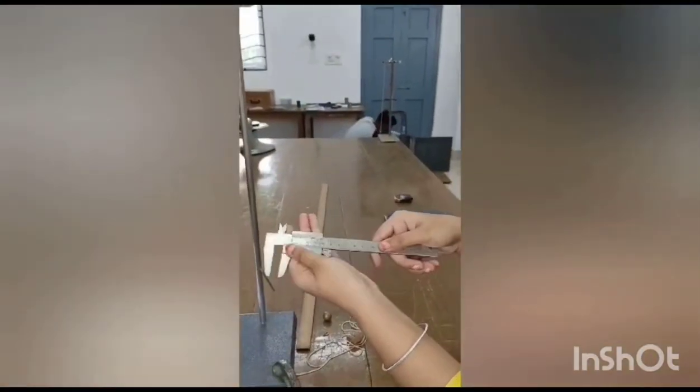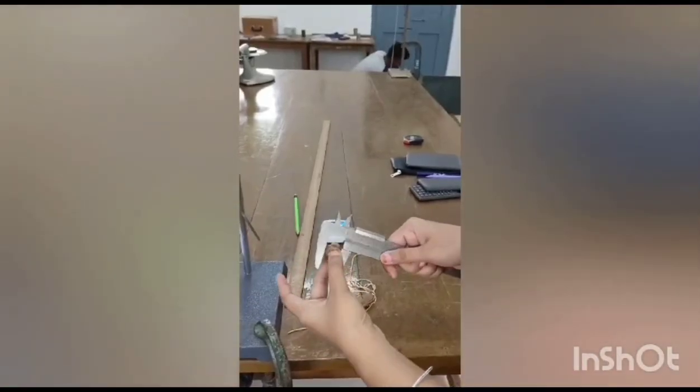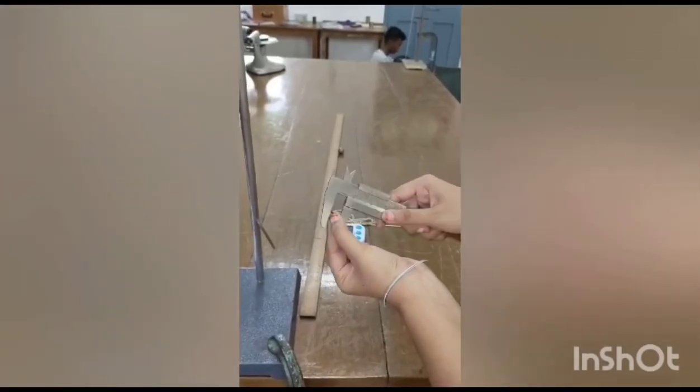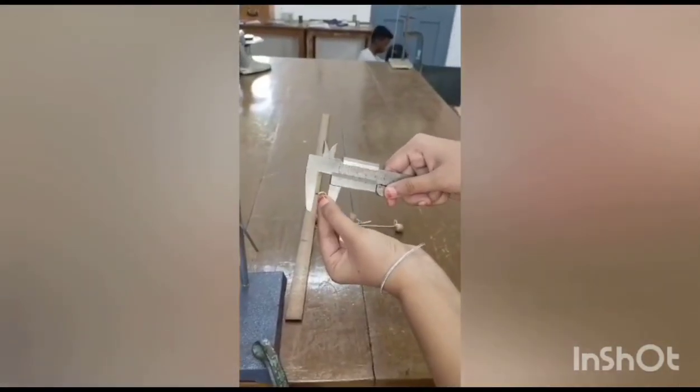After that we should measure the diameter of the bob and length of the hook using vernier calipers by placing it at three different positions and take mean of them. We should record main scale reading and vernier scale reading.